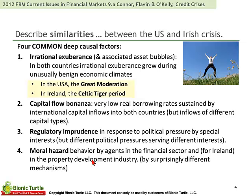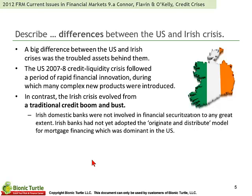Moral hazard we've seen before, especially in topic six — credit and the subprime securitization. A big difference between the U.S. and Irish crisis was the troubled assets behind the crisis. The U.S. crisis, generally referred to as 2007 and 2008, followed a period of rapid financial innovation during which many complex new products were introduced — asset-backed securitizations (ABS), specifically mortgage-backed securities, subprime mortgage-backed securities, collateralized mortgage obligations, CDOs, and even CDO squared — generally the structured finance products.